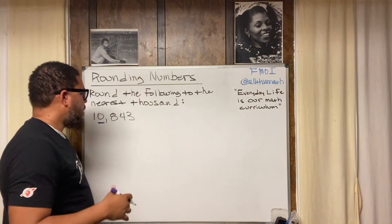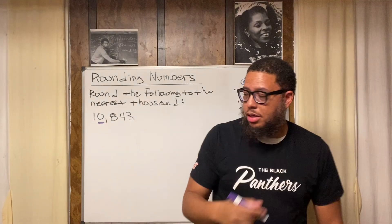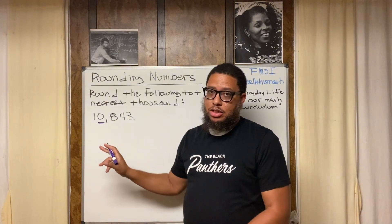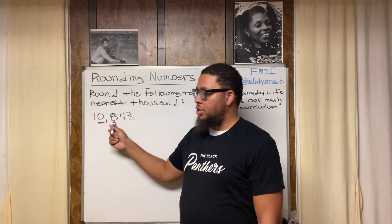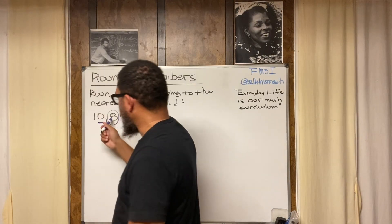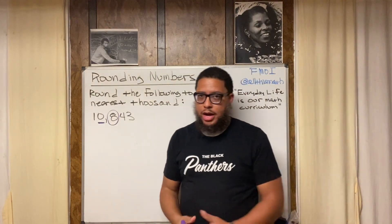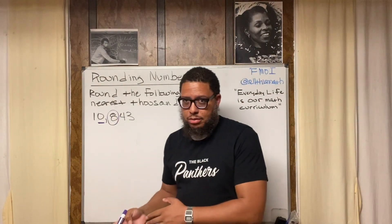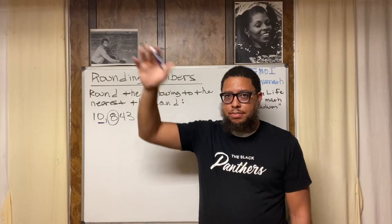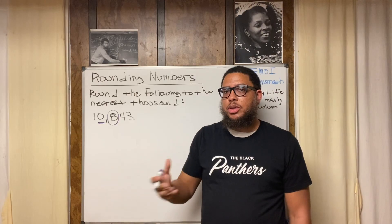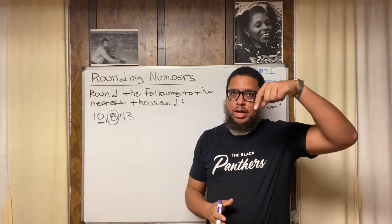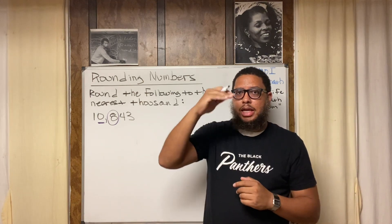The digit immediately to the right of the zero determines what we do with it — not the digit to the left. That digit is eight. Because eight is what I call the 'five and over crew' — five, six, seven, eight, or nine — that means the zero is going to go up. We're going to round up.